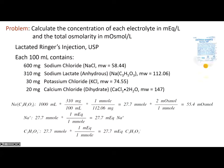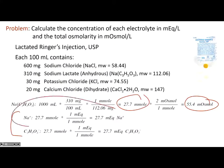For sodium lactate: 1,000 mL times 310 mg per 100 mL divided by its molecular weight gives 27.7 millimoles of sodium lactate. Even though lactate is a large molecule, only the sodium separates from it — so you still get two particles. Multiply by two to get milliosmoles. Since valence on both sodium and lactate is one, you get the same number of milliequivalents as millimoles: 27.7 milliequivalents each.